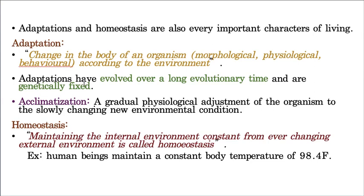To develop even one single character genetically fixed, it needs two or three generations — a long evolutionary process. There is also acclimatization, which means the ability of an organism to gradually adjust towards changing environmental conditions — how slowly an organism adjusts to changes taking place in the external atmosphere.